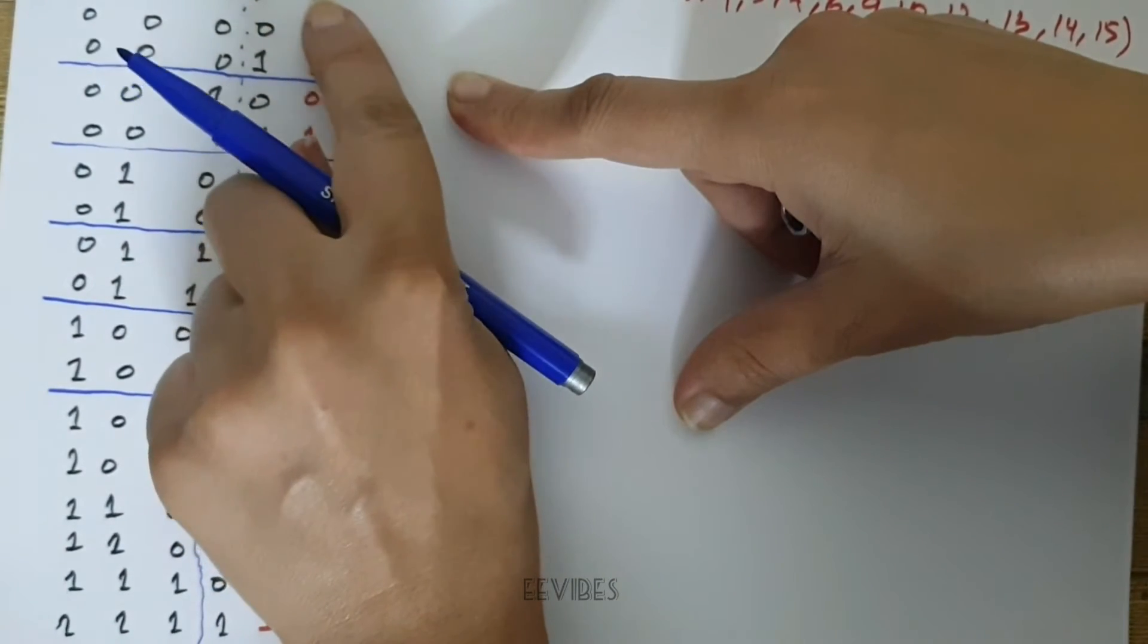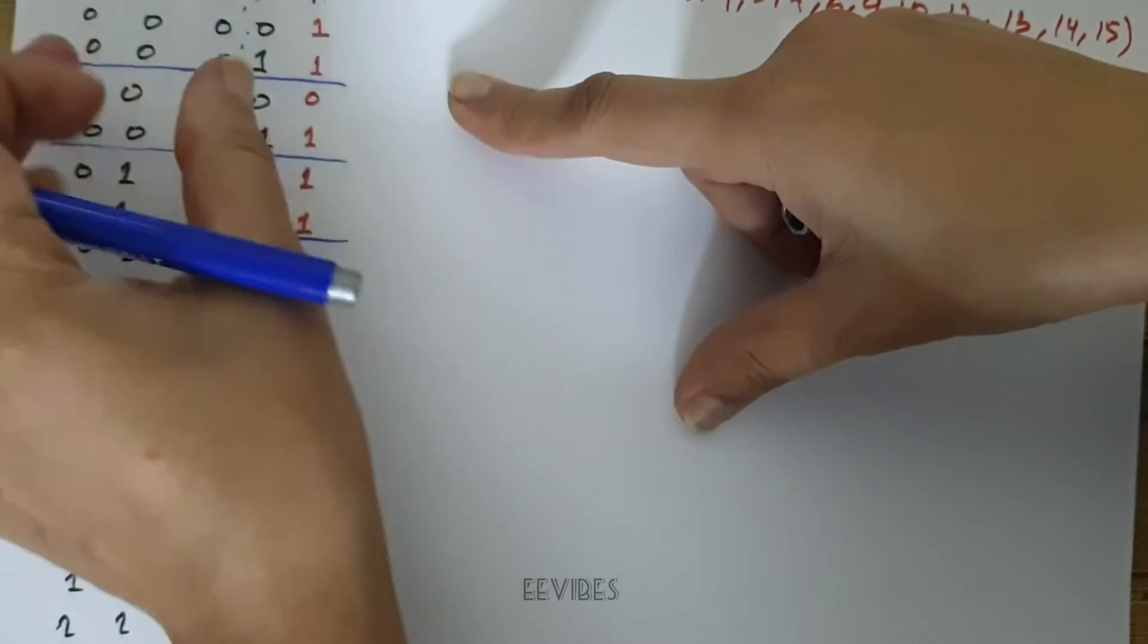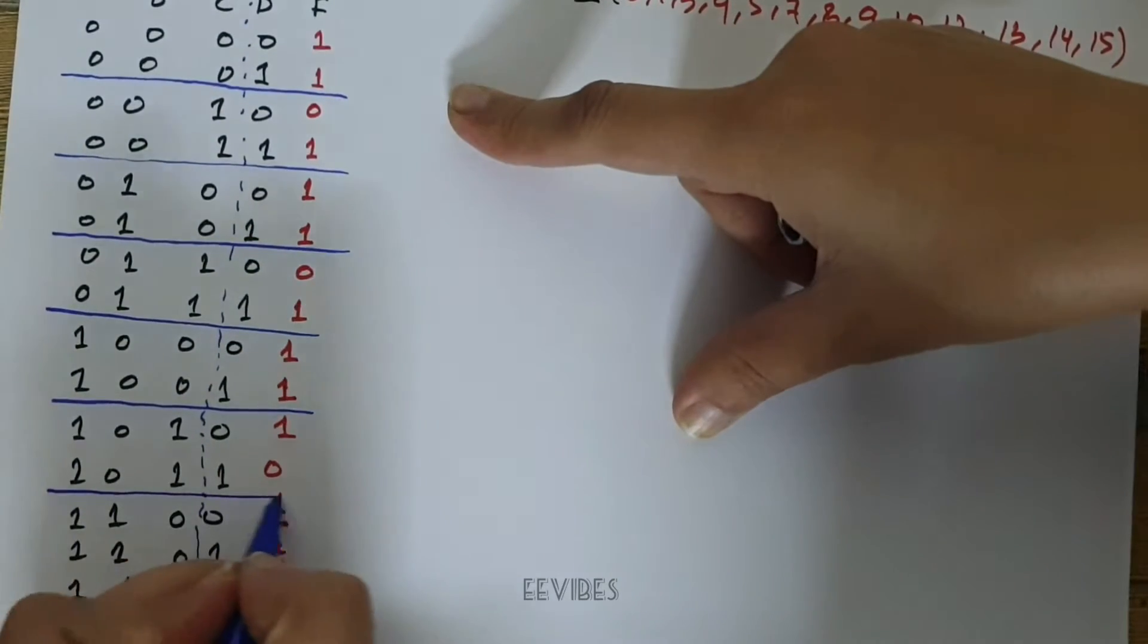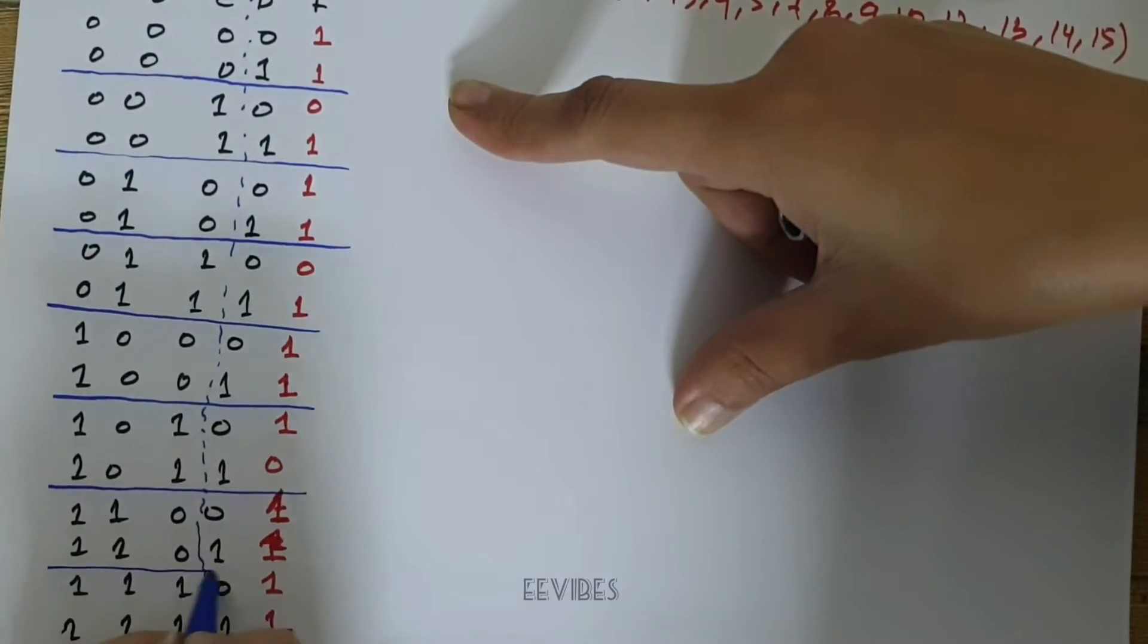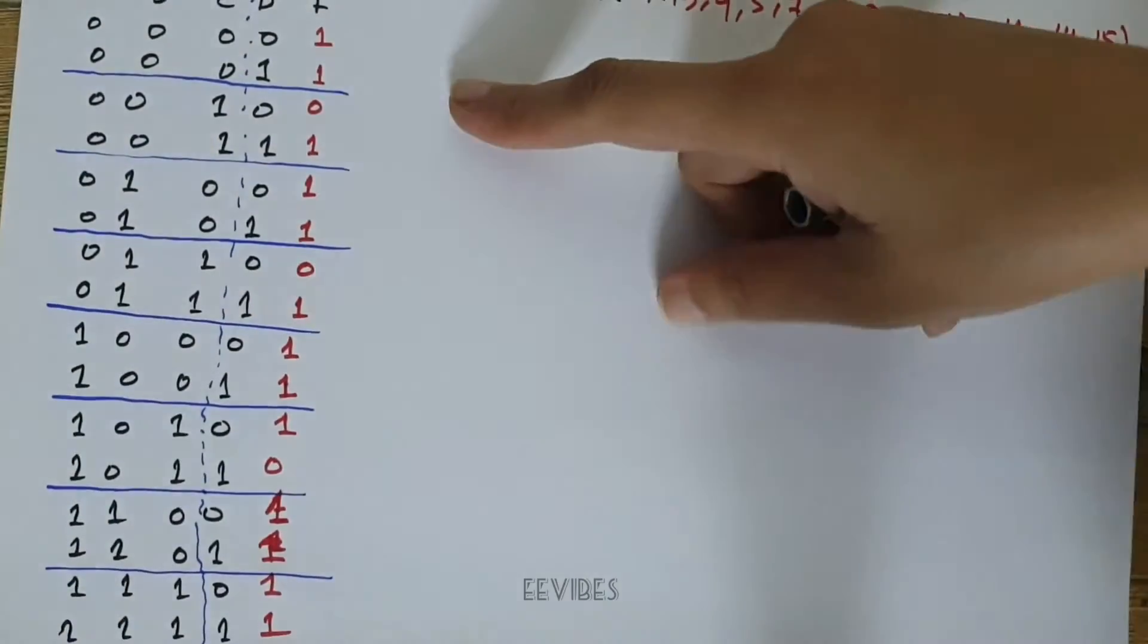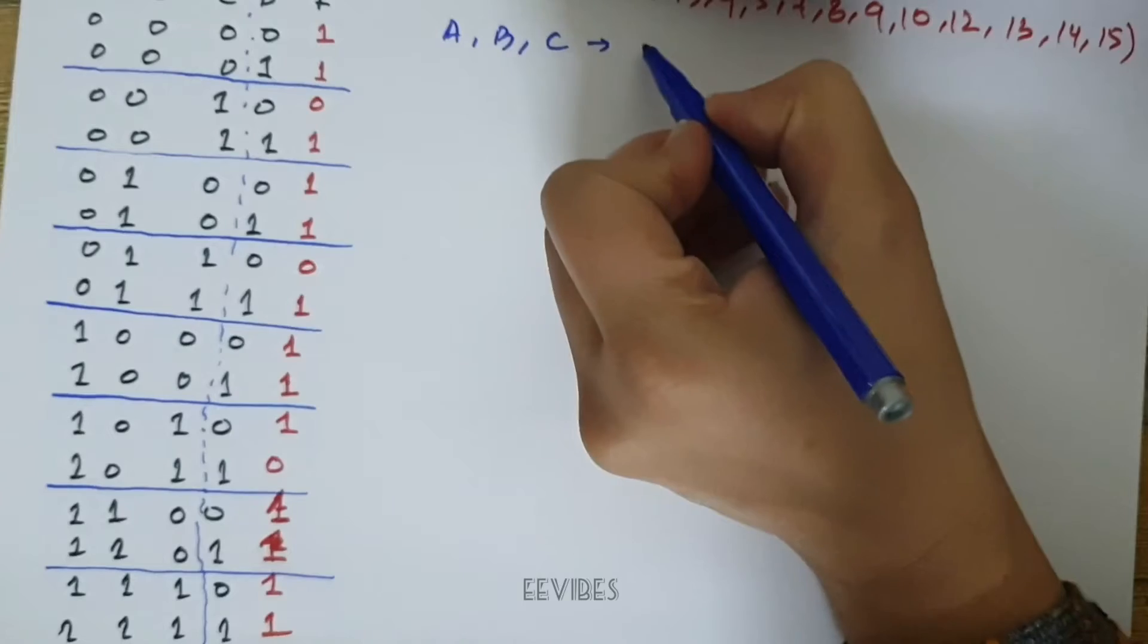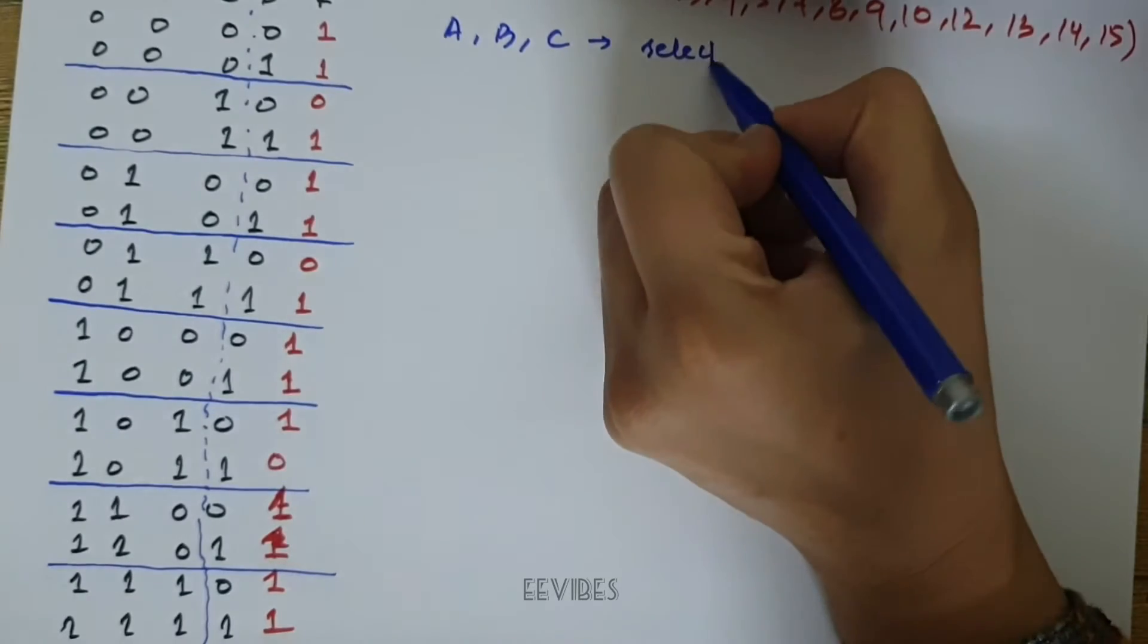here because for these partitioning, these variables do not change the values. I am doing so because I will write the last variable or the function in terms of the last variable, and these remaining variables will act as the select lines for this mux. So here A, B, and C will act as the select lines